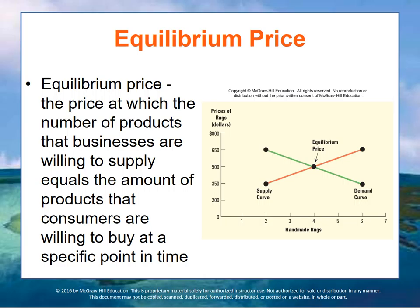Let's consider an example of handmade rugs. Consumers may be willing to buy six rugs at $350 each, four at $500 each, but only one at $650. The relationship between the price and the number of rugs that consumers are willing to buy can be graphically shown with a demand curve. A company that sells rugs may be willing to sell six at $650 each, four at $500 each, but just two at $350. The relationship between the price and the quantity of rugs the company is willing to supply is shown as the supply curve.